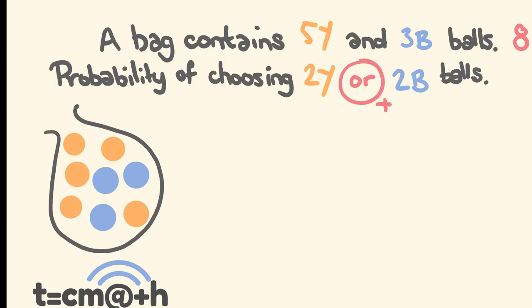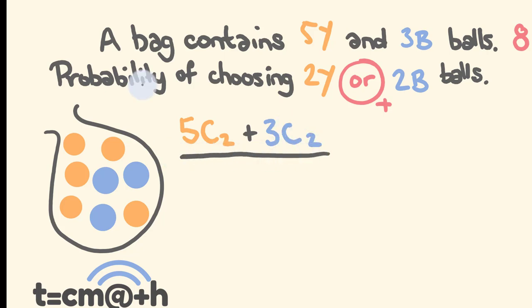Let's go through and do this. For the yellow balls, from five we're going to be choosing two. We're going to be adding this — because it's an 'or' — to the blue balls: from three, we're going to be choosing two. All of this then goes over our total outcomes: we're choosing two balls from eight, so 8C2.